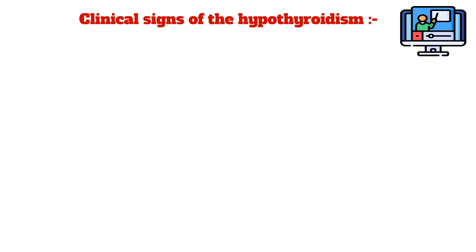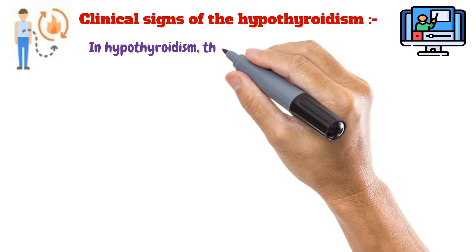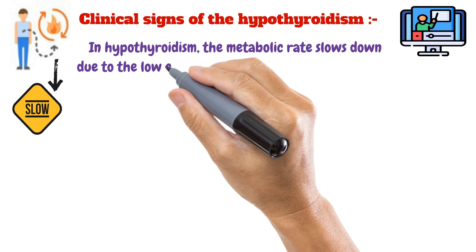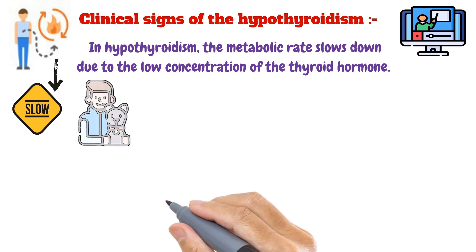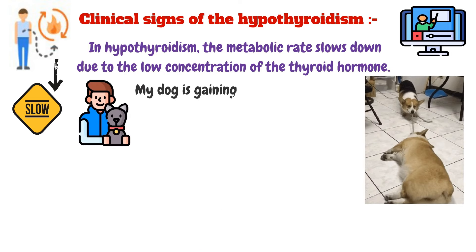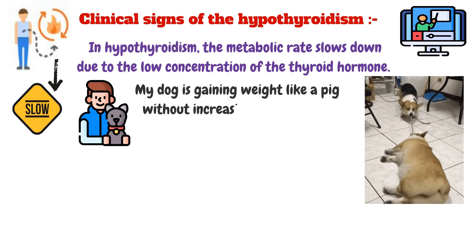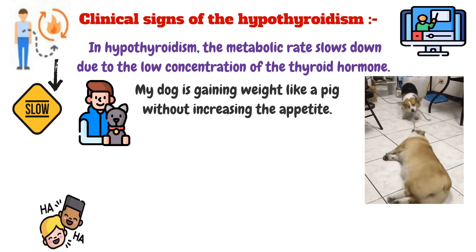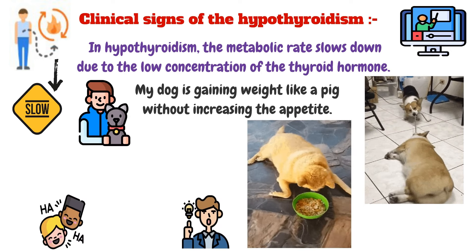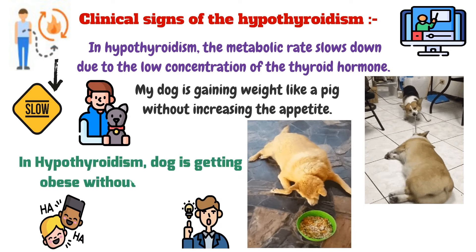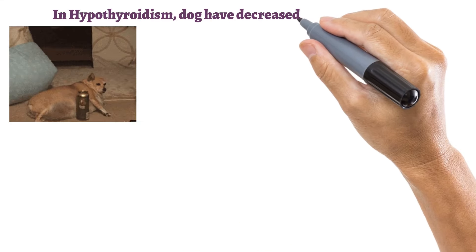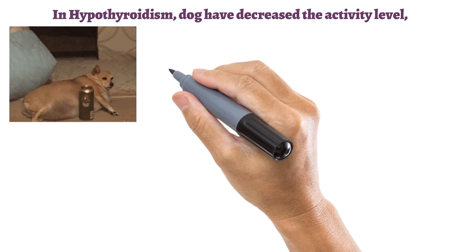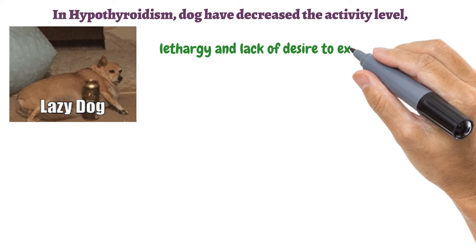In hypothyroidism, the metabolic rate slows down due to low thyroid hormone concentration. Owners often report that their dog is gaining weight without any increase in appetite — the dog is becoming obese without eating much. Dogs with hypothyroidism also have a decreased activity level, leading to lethargy and a lack of desire to exercise.